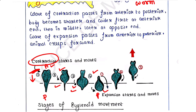Once the contraction moves to the posterior end, expansion starts again at the anterior end of the body. Contraction starts from the anterior part and reaches the posterior part, then expansion starts at the anterior part. The wave of expansion passes from anterior to posterior end, and the animal creeps forward.